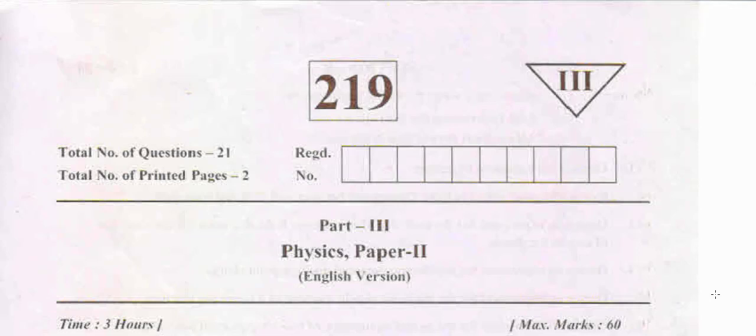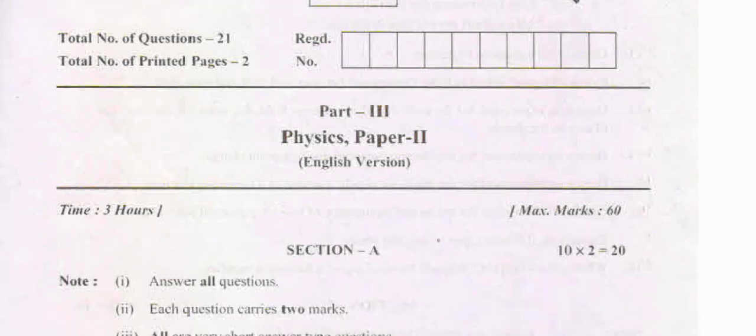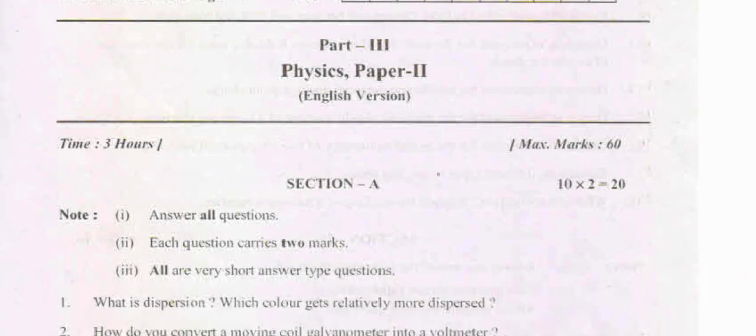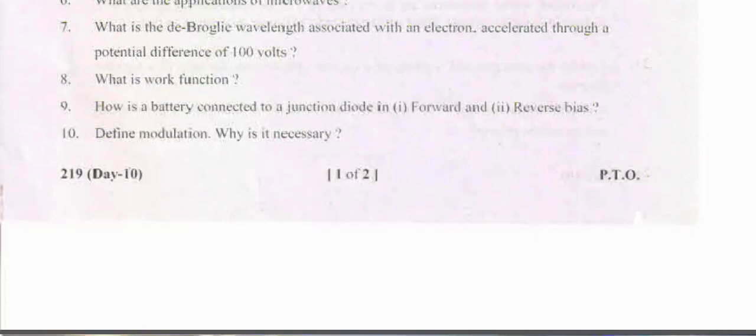Hi students, intermediate second year physics paper. This is for the just-gone examination. Perhaps the most important for you, as the maximum is 60 marks. 10 times 2 is equal to 20 marks. The main thing, most important for you, is the two marks section - very very important position for your examination purpose.